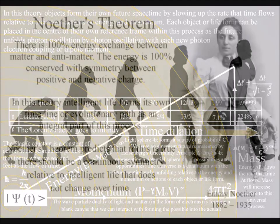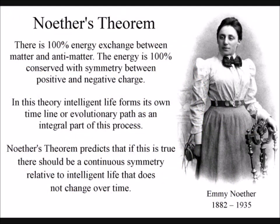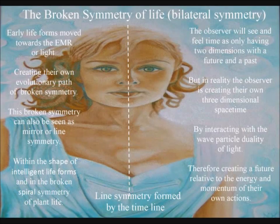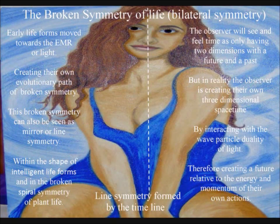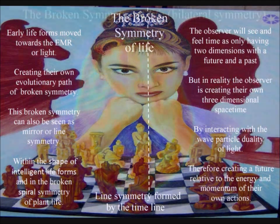Noether's theorem predicts that, if this is true, there should be a continuous symmetry to the energy exchange that does not change over time. In this theory, this is represented by the line symmetry, or left and right handedness, that all intelligent life has, with creation being in the hand and eye of the beholder.